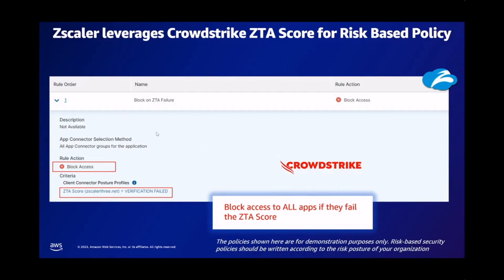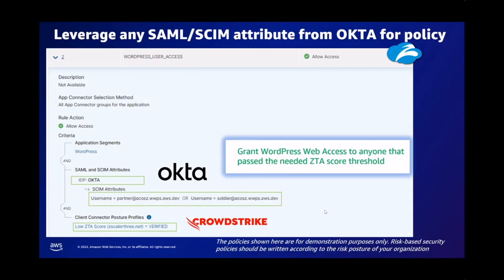Here's an example of the policy used to enforce blocked access to all applications upon failure of the ZTA score. If this check does not meet the predefined threshold, there is no further movement. The low ZTA score threshold chosen was 25 — a device registering below 25 will have no access to the WordPress app, while scores above 25 will pass. A score of zero is very bad, and a score of 100 is the goal.